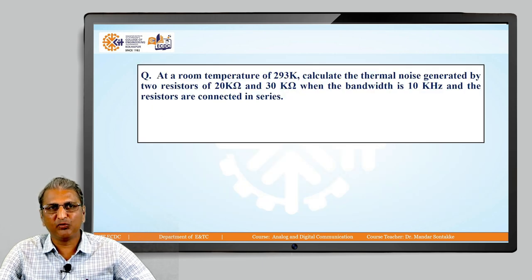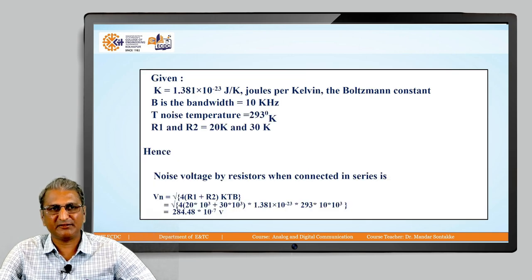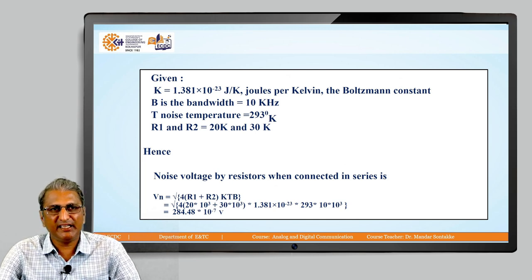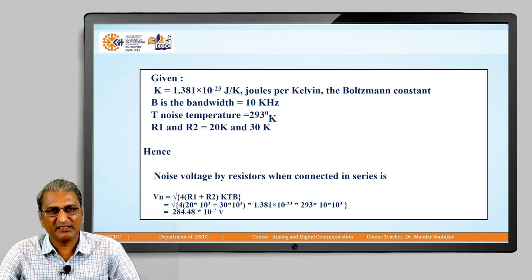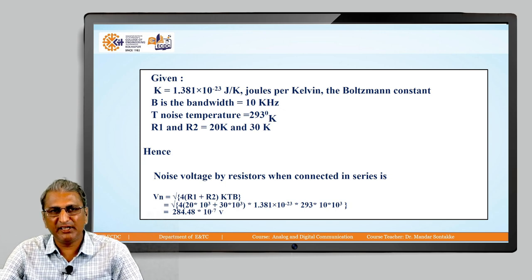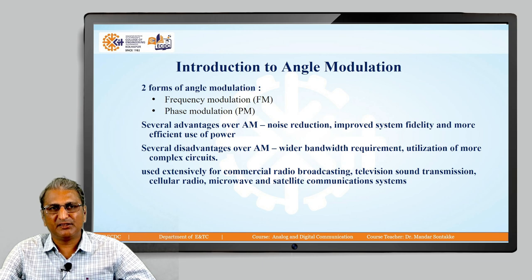Consider the example. At room temperature 293 Kelvin, calculate the thermal noise generated by two resistors having values 20K and 30K when the bandwidth is 10 KHz and the resistors are connected in series. The value of K is given, constant B is given, T is given, R1 and R2 are given. So the total is given by Vn equals square root of 4KTB times (R1 plus R2). So the answer will be 284.48 × 10^-7 volt.